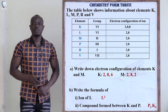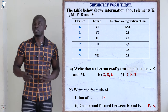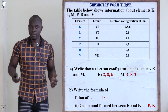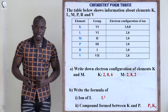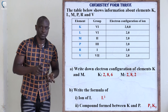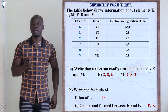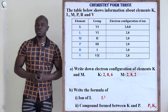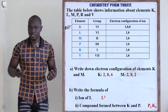The first part of the question is asking us to write down the electronic configuration of element K and element M. Looking at the table, we have the elements, their groups, and their ionic configuration. Don't be confused — it is written 'electronic configuration of ion,' meaning this is the ionic configuration. Now let's answer: what is the configuration of element K? It is going to be 2,8,6.